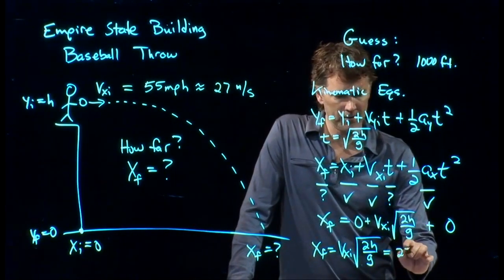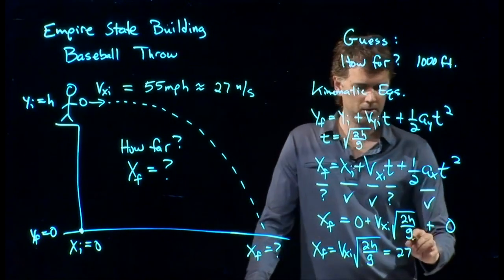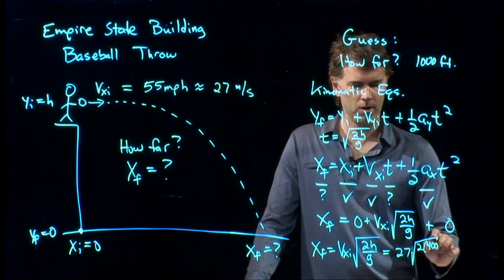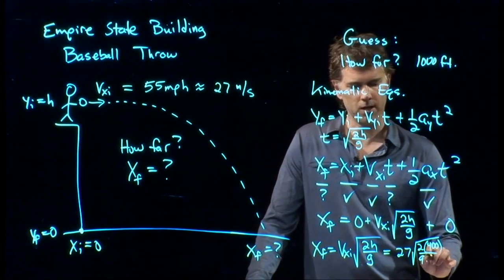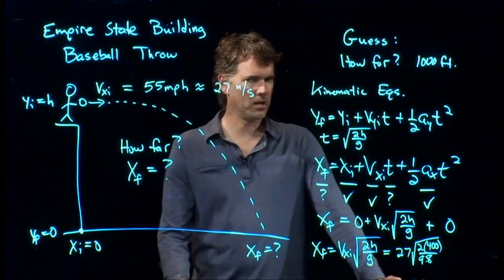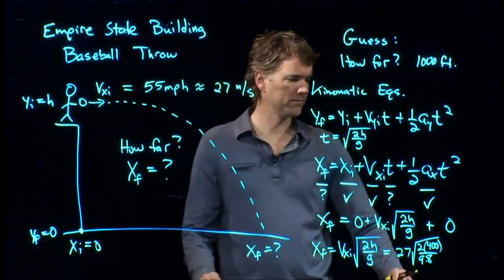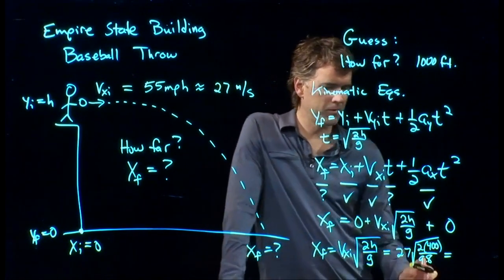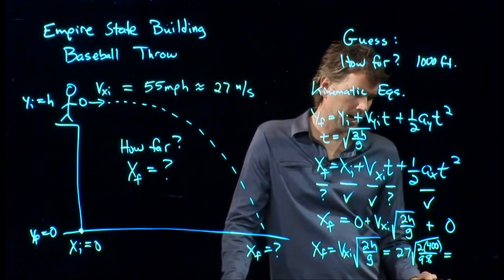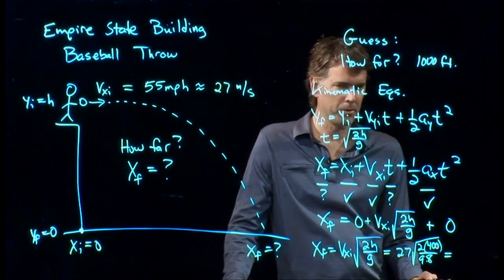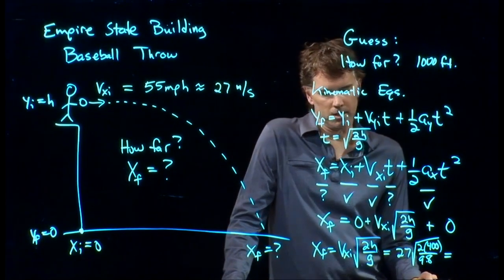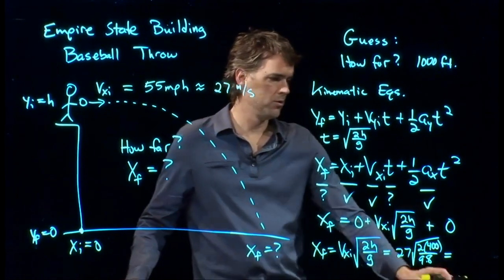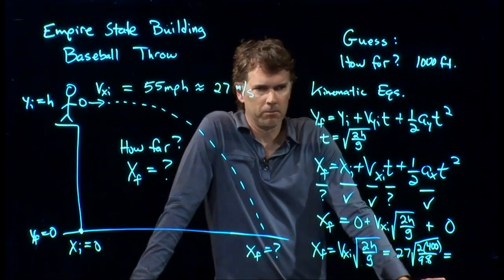So we've got 27, and now we're all in SI units, so we don't have to write the units down every time. We've got a 2, we've got the height of 400, and we have G of 9.8. And somebody run that in your calculator and tell me what you get. I'll approximate it here. We knew that the time was about 9. 27 times 9 is what? Well, that's pretty close to 30 times 9, which is 270. And then we need to subtract a little bit, so maybe 250.